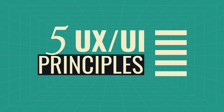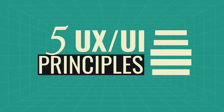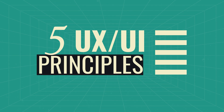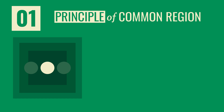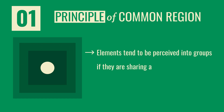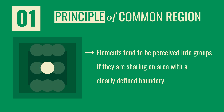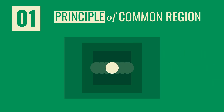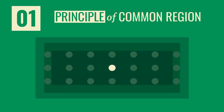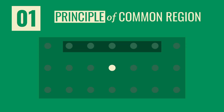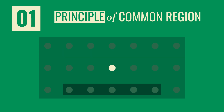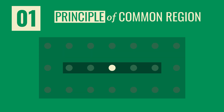Today I wanted to share with you five UX and UI principles that you'll find in most websites. Let's start with the first one: the principle of common region. This principle states that elements tend to be perceived into groups if they are sharing an area with a clearly defined boundary. This principle of grouping was first proposed by psychologists to account for the observation that humans naturally perceive objects as organized patterns.